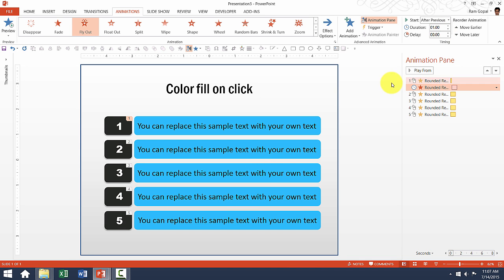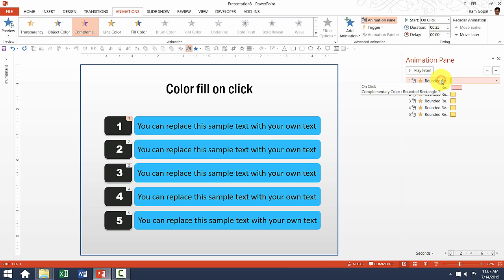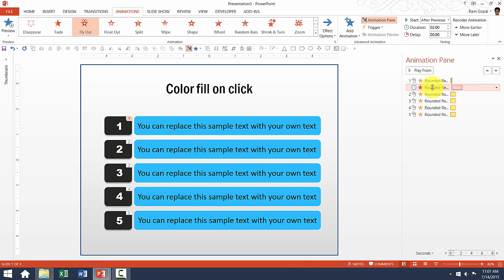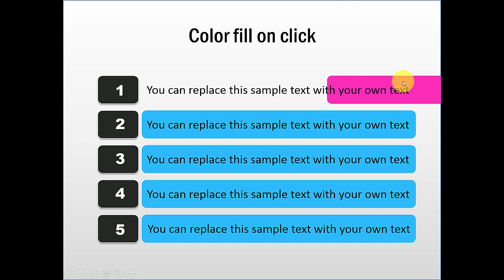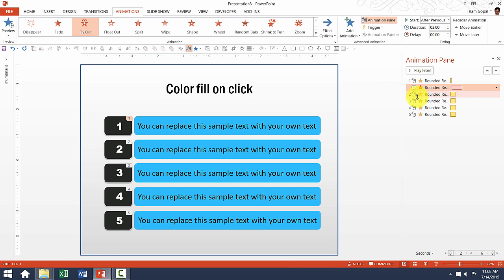When it flies out, it will fly out slowly. I'll set it to 2 seconds so you can clearly observe what is happening. So I've done two things: I reduced the duration for the first animation so it happens very quickly, and I increased the duration for the second animation so it goes out very slowly. In slideshow mode, it changes color immediately and then goes out very slowly — that is how you alter the timing.